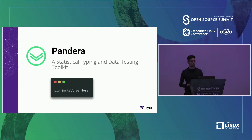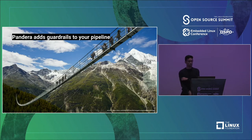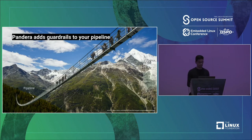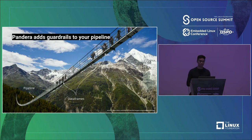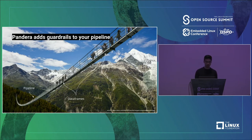But what if I want to validate data properties beyond data types? This is where Pandera comes in — it's a statistical typing and data testing tool. Just install Pandera and you can get started. Pandera adds guardrails to your pipeline. If your pipeline is a suspension bridge and your data frames are people traversing it, Pandera is the guardrails that help you know when someone has fallen off — it helps you keep your data frames as you expect them as they flow through the pipeline.